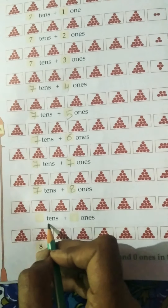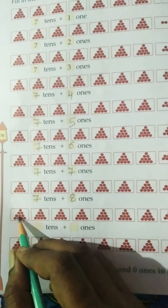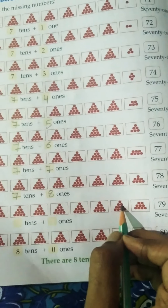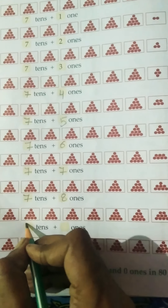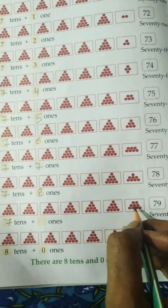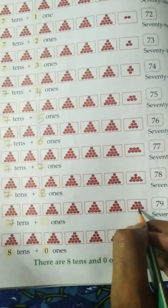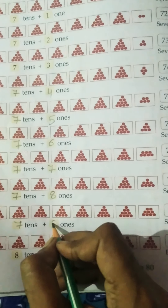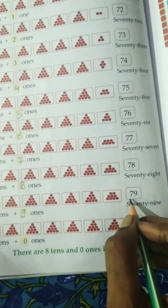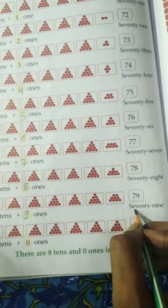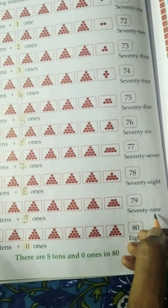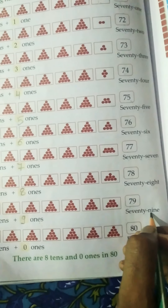Next: how many tens and ones? 1, 2, 3, 4, 5, 6, 7. How many tens? 7 tens. And ones: 1, 2, 3, 4, 5, 6, 7, 8, 9. 7 tens plus 9 ones is equal to 79. Spelling: S-E-V-E-N-T-Y, 70, N-I-N-E, 9, 79.